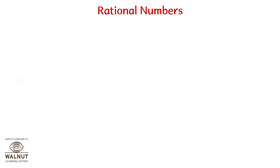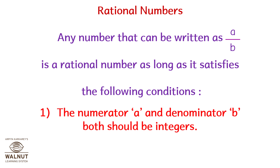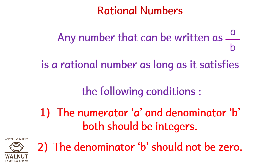Let's look at rational numbers. Any number that can be written as a upon b is a rational number, as long as it satisfies the following conditions: number one, the numerator a and the denominator b both should be integers; and number two, the denominator b should not be zero.